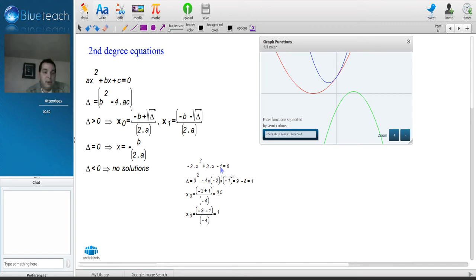Solving this equation is very easy and straightforward. First thing you have to do is calculate delta. Delta equals b² - 4ac. In this case, it equals 3² - 4 times -2 times -1. So that's 9 - 8, that's 1. So delta equals 1.